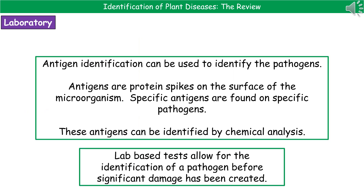The second lab test is antigen identification. Antigens are the protein spikes on the surface of a microorganism, and specific pathogens have specific antigens. So we can identify the pathogen by identifying those antigens using a chemical analysis.